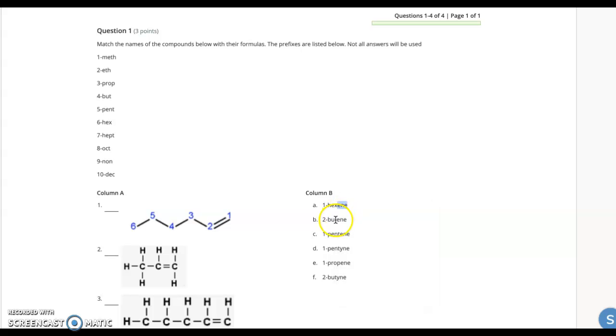Now, the only hex-E-N-E one is this one right here. So this would be one hexene. It's a one because that's the lowest number that the double bond touches.